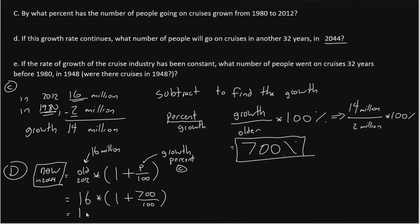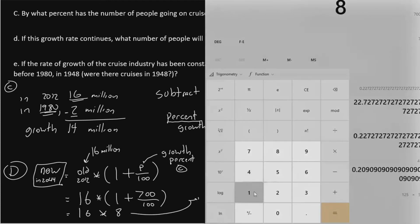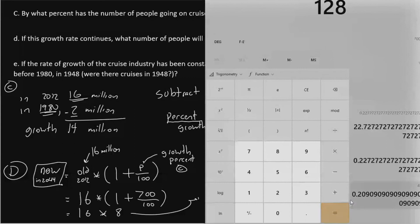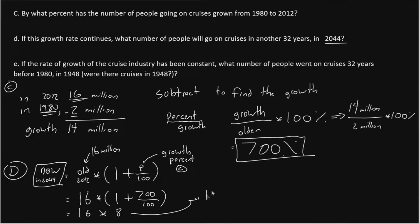It is 8. And so now we have 16 multiply 8, and we get 128. So we can say that the number of people that will go on cruises in 2044, if this growth rate continues, is 128 million.